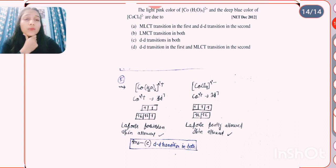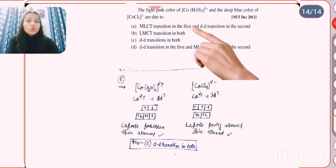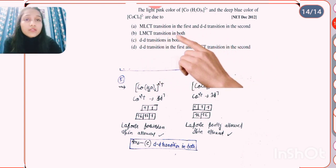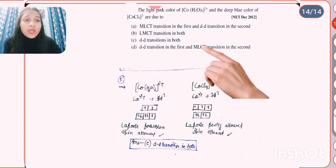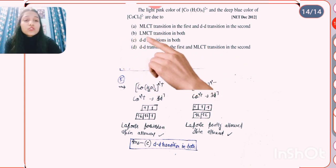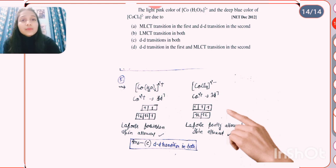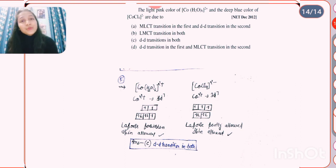Looking at the answer options: MLCT transition in first and D-D in second — no. D-D transition in both — no. D-D transition in first and MLCT — no, there is no metal to ligand charge transfer here. The correct answer is C: D-D transition in both cases, because D-D transition is possible in both compounds. These are our five questions for today. Please give feedback in the comment box for any improvements or requests for more questions on any topic.